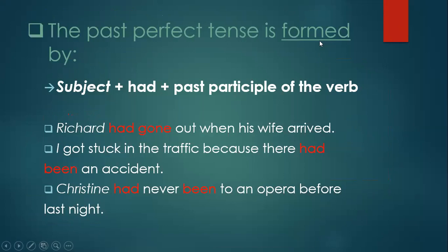Now, what's the form? When using the past perfect tense, how do I form it? First we have the subject, then 'had', then the past participle of the verb. For example, 'Richard' is the subject, then 'had gone' — 'gone' is the past participle of 'go'. Remember: go, went, gone. For the past perfect tense, I need to memorize the past participle of irregular verbs, not the past simple. So I say: Richard had gone out when his wife arrived, or I got stuck in traffic because there had been an incident — 'had' plus 'been', the past participle of 'be'.